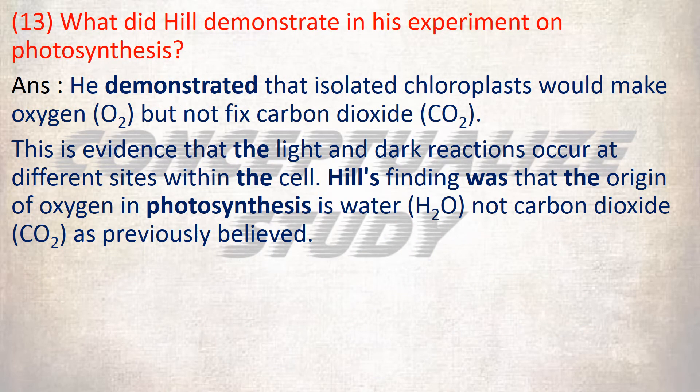The next is: what did Hill demonstrate in his experiment on photosynthesis? He demonstrated that isolated chloroplasts would make oxygen but not fix carbon dioxide. This is evidence that the light and dark reactions occur at different sites within the cell. His finding was that the origin of oxygen in photosynthesis is water, not carbon dioxide, as was previously believed.